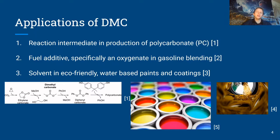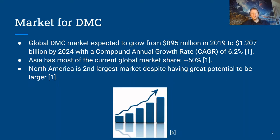The primary use of DMC is as a reaction intermediate in the production of PC, which is used as a structural material in electronic components. Another application is as a fuel additive, as an oxygenate in gasoline blending. As of 2009, DMC is no longer classified as a VOC, which decreases the cost for utilizing DMC in several applications like water-based eco-friendly paints and coatings. The global market for DMC was $895 million in 2019 and is expected to grow to $1.2 billion by 2024, with a compound annual growth rate of 6.2 percent.